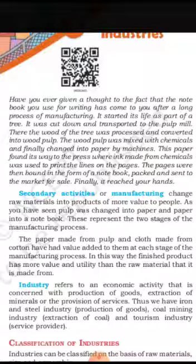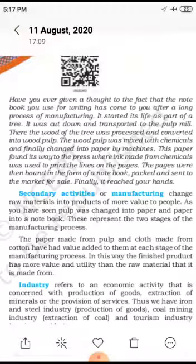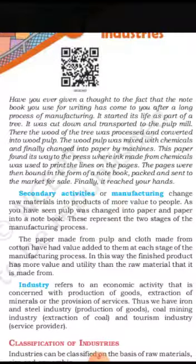The wood of the tree was processed and converted into wood pulp. The wood pulp was mixed with chemicals and finally changed into paper by machine. This paper found its way to a press where ink — made from chemicals — was used to print lines on the pages.